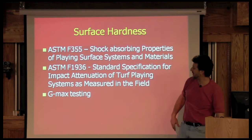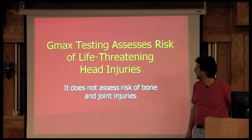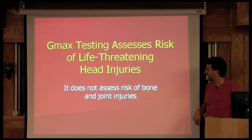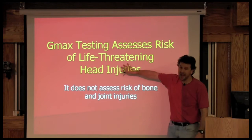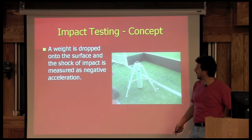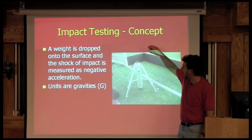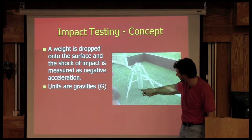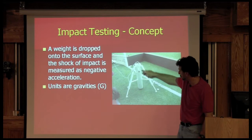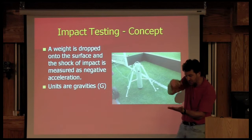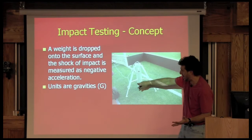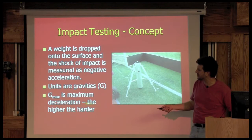This is often referred to as GMAX testing. GMAX testing assesses the risk of life-threatening head injuries; it does not assess the risk of bone or joint injuries. Impact testing works by dropping a weight onto the surface, and the shock of the impact is measured as negative acceleration. You drop the hammer down the tube — a very sophisticated GMAX device costing around $20,000 — and the rate at which it decelerates is an indication of how energy is transferred back. GMAX is maximum deceleration; the higher the value, the harder the surface.